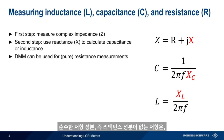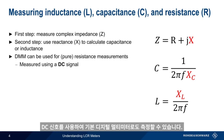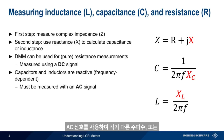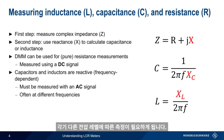A pure resistance — that is, one with no complex or reactive part — can be measured with a basic digital multimeter using a DC signal. The impedance of a capacitor or inductor, on the other hand, is frequency dependent, and therefore must be measured using an AC signal, often at different frequencies, and sometimes at different levels or voltages as well.